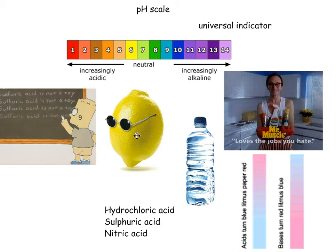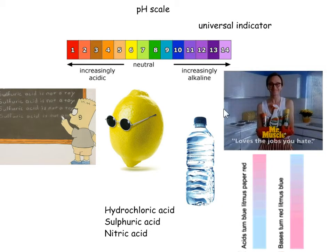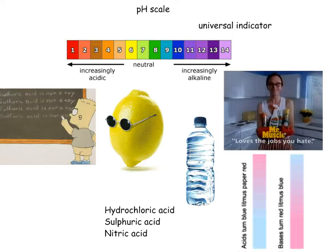If we squeezed some lemon juice and popped in some universal indicator, it'd probably be around this bit here — sort of a weak acid. Then we get to seven, which is neutral — that's the water, neutral. Remember, this makes a neutral salt. And this one — Mr. Muscle and lots of other cleaners — are alkaline. They go up to these high numbers with a beautiful purply-blue colour. So if I put universal indicator in the acid it'll be red, and in the alkali it would be blue-purple, but if I put them together, I make the neutral salt and water, which will be green. It's just nice, sorts it all out.